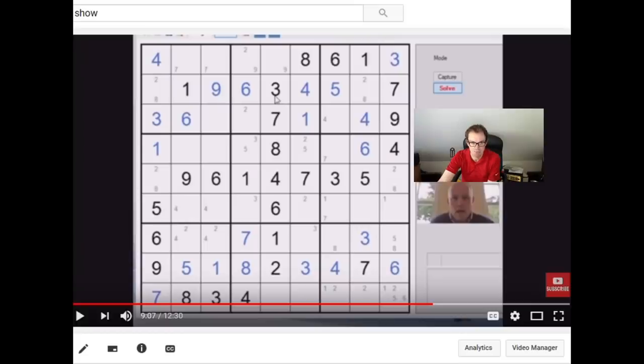He's used standard Snyder notation almost throughout. And by that I mean in three by three boxes where a number can only go in one of two positions, he's notated that. The only two divergences I've seen from that are in row five. You can see he's highlighted this two eight pair. And in row two, he's found a two eight pair. But that's all.